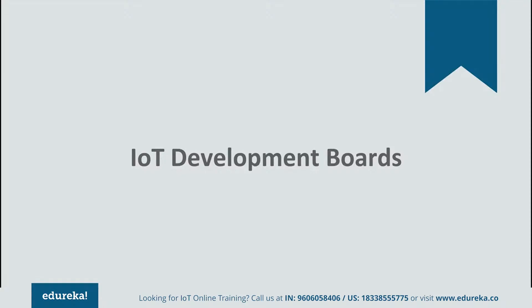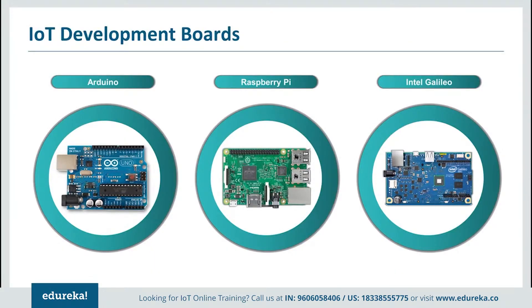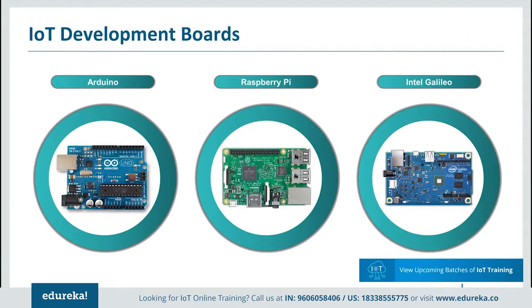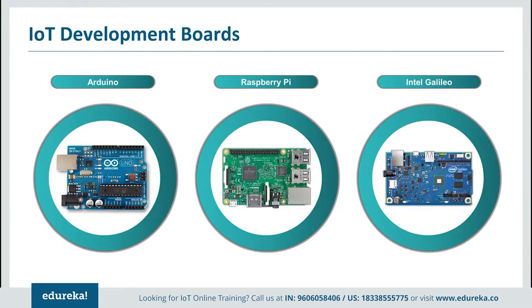Now let's look at the different IoT development boards. Arduino is an open-source platform for building electronic projects — it consists of both a physical programmable circuit board and a piece of software or IDE. Raspberry Pi is a credit card-sized computer originally designed for education, inspired by the 1981 BBC Micro. It is a single-board computer based on a Broadcom system-on-chip with an ARM processor of around 700 MHz, a GPU, and 256 to 512 MB RAM, costing around $35. Intel Galileo is the first Arduino-certified development board based on Intel x86 architecture, designed for the maker and education communities, and hardware/software pin-compatible with shields designed for the Arduino Uno R3.